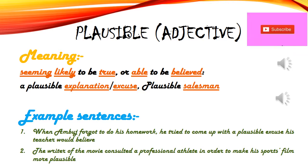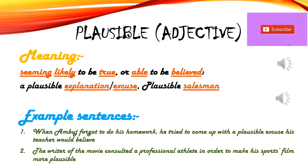Second example: The writer of the movie consulted a professional athlete in order to make his sports film more plausible. Ek sports film ban rahi thi — actor professional athlete nahi tha, lekin uska role ek professional athlete ka tha. Isliye writer ne ek professional athlete se consult kiya, ek-ek activity samjhi, ta ki movie zyada plausible bane aur logo ko zyada sacha lage.